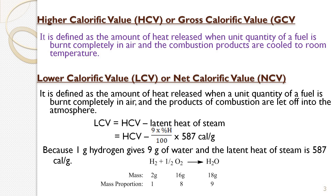Generally, the combustion products are the flue gases and moisture. Moisture is formed due to hydrogen present in the fuel — hydrogen is converted into water vapor, and this water is vaporized by absorbing some amount of heat, which we call the latent heat of steam. In higher calorific value, this latent heat of steam is also included. So the total or gross heat is calculated in this definition, which is why it is called the higher calorific value or gross calorific value.